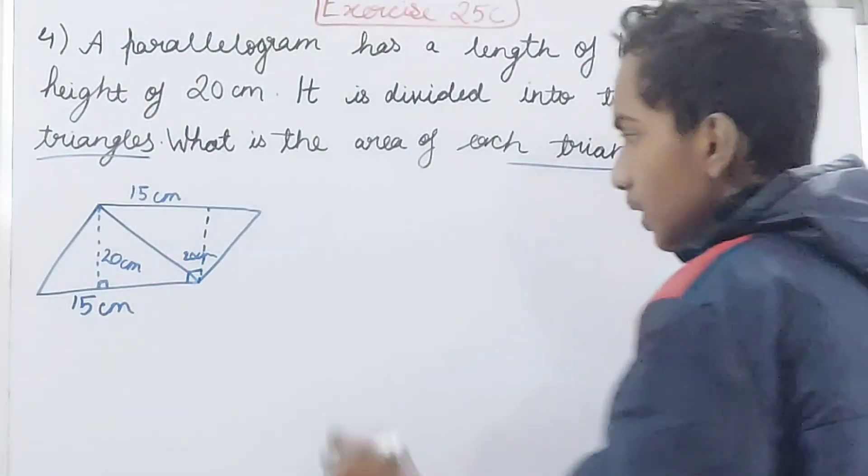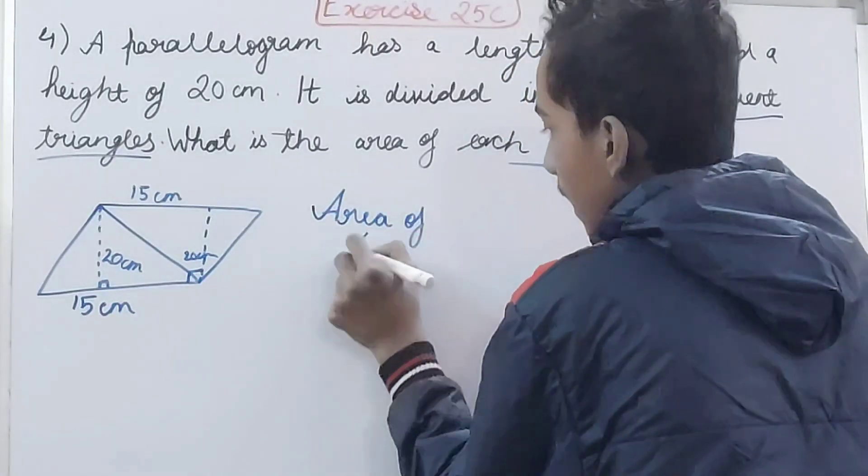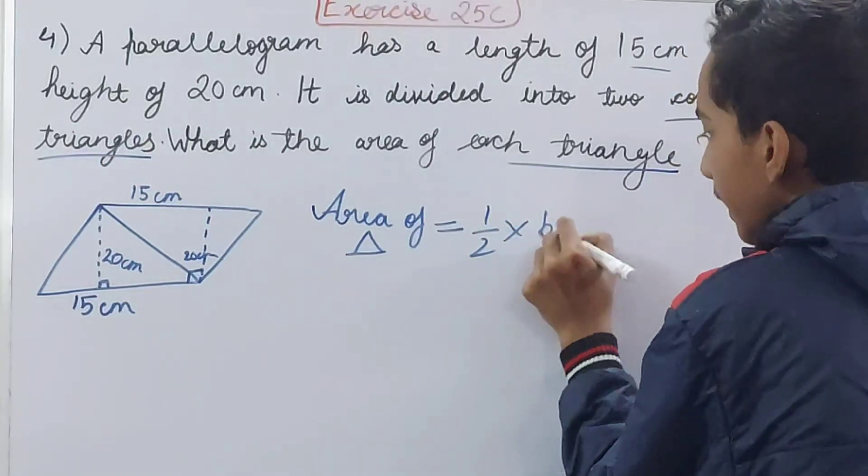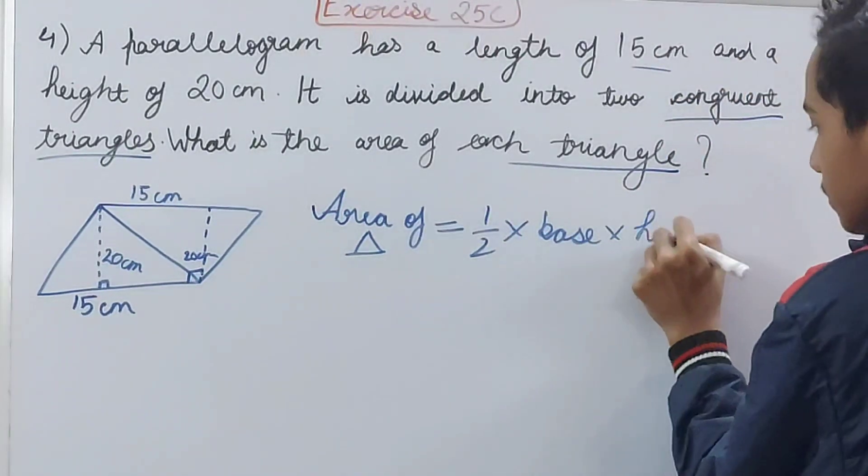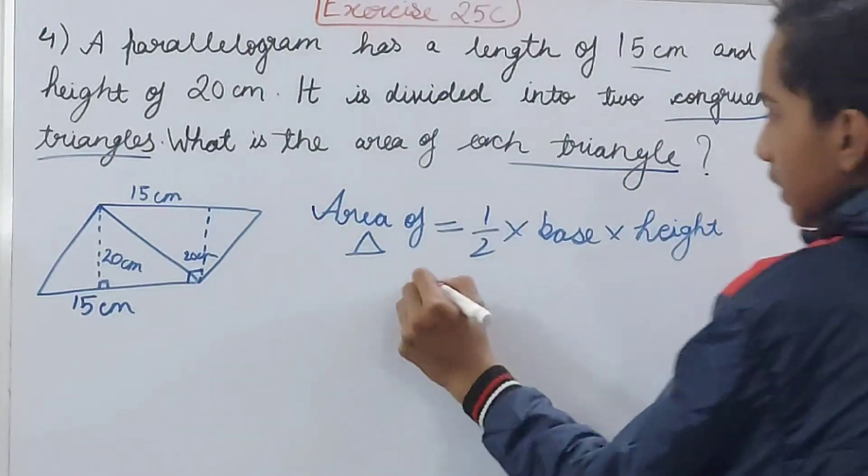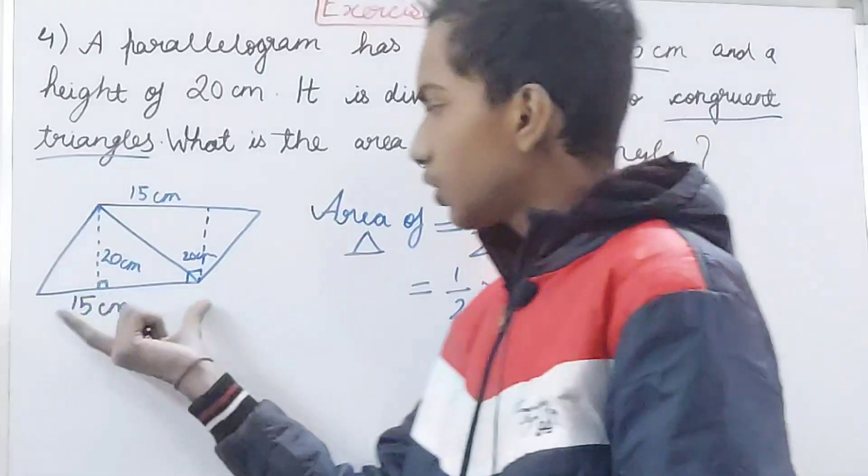So very simple, area of triangle is equal to half into base into height. This formula we will be using for this question. So we will have, take any triangle let's take this one.